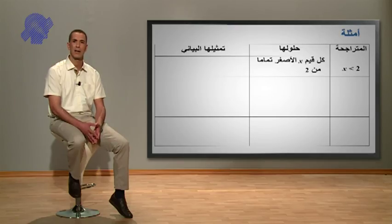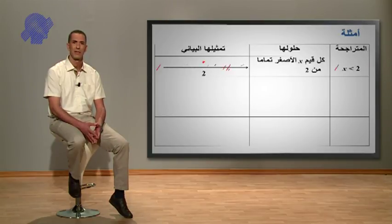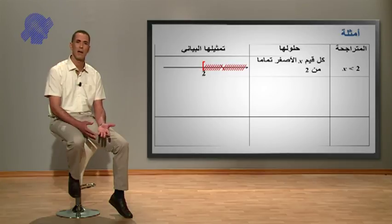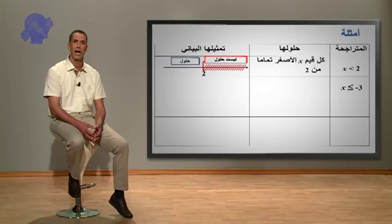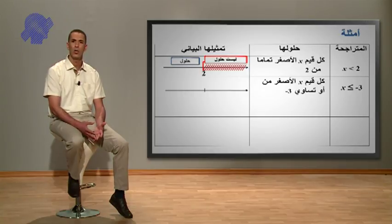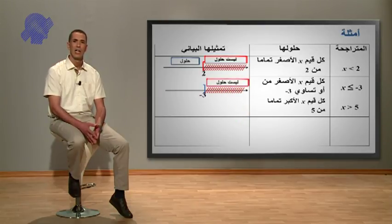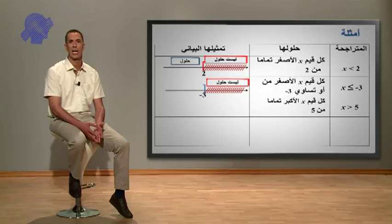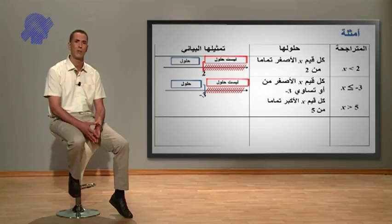أمثلة: المتراجحة X أصغر تماماً من 2، حلولها هي كل قيم X الأصغر تماماً من 2، مع 2 ليس حلاً. X أصغر أو يساوي من ناقص 3، كل قيم X الأصغر من أو تساوي ناقص 3 هي حلول لهذه المتراجحة، الجزء المشطب غير حلول، لاحظوا ناقص 3 يدخل ضمن حلول المتراجحة.